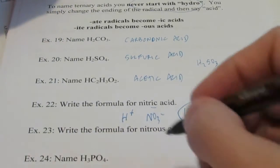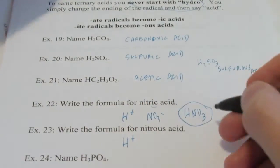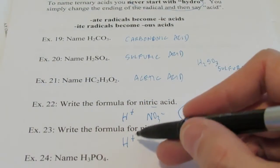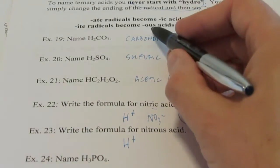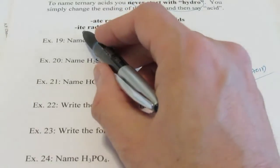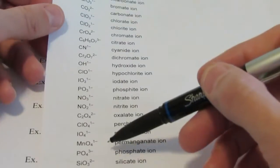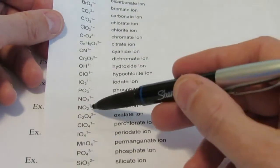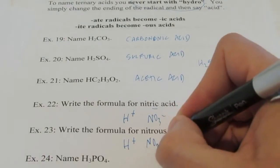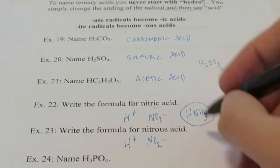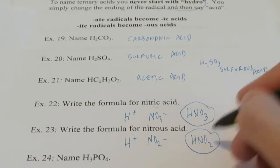What about nitrous acid? Once again, I know it's a ternary acid — it does not have hydro in it. So I have a hydrogen acting like a metal with a 1+ charge. The -ous ending tells us -ous acids come from -ite radicals. I'm going to look up nitrite — nitrite is NO₂⁻¹. Once again, one of each. So that is HNO₂, nitrous acid.